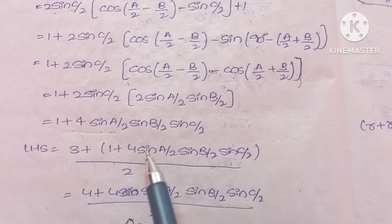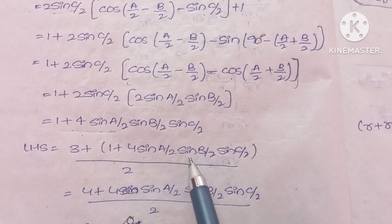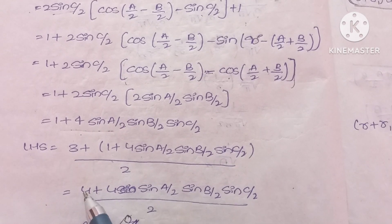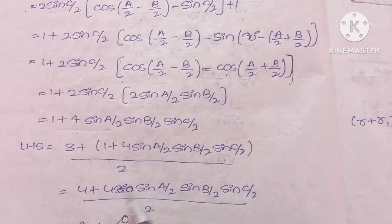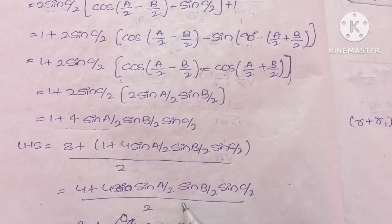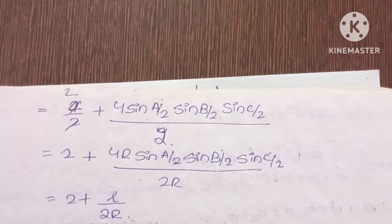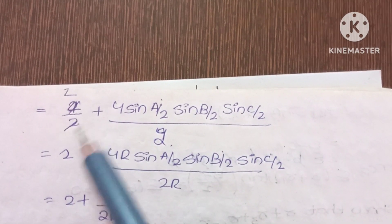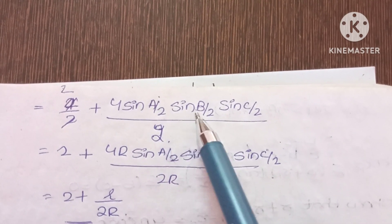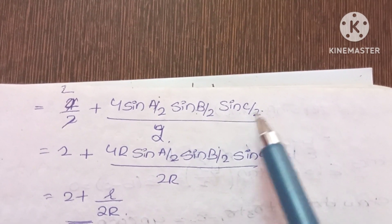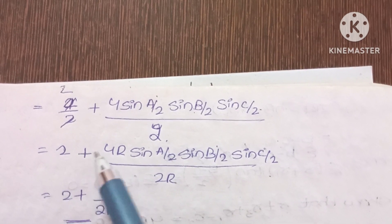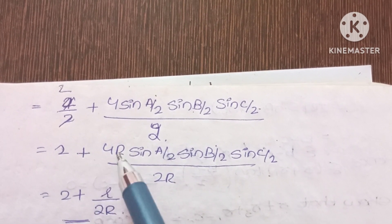Now substituting back: LHS = (3 + 1 + 4sin(A/2)sin(B/2)sin(C/2))/2 = (4 + 4sin(A/2)sin(B/2)sin(C/2))/2 = 2 + 2sin(A/2)sin(B/2)sin(C/2). Since r = 4R·sin(A/2)sin(B/2)sin(C/2), this equals 2 + r/(2R), which proves the identity.